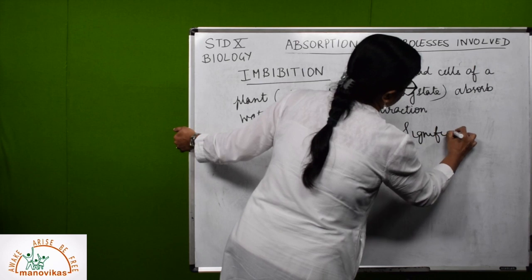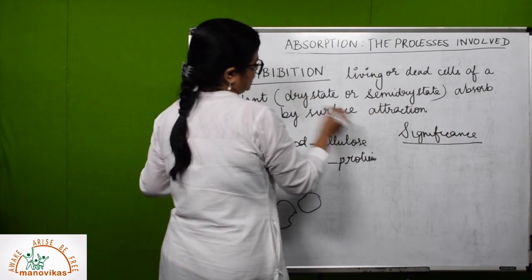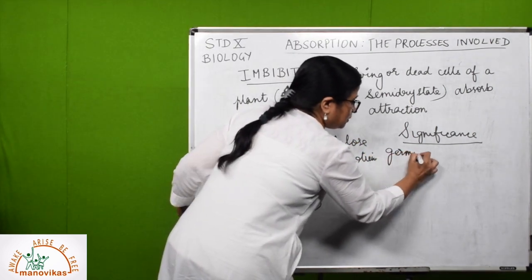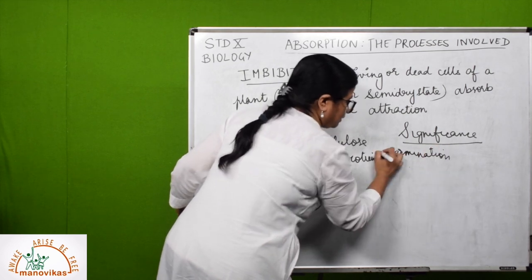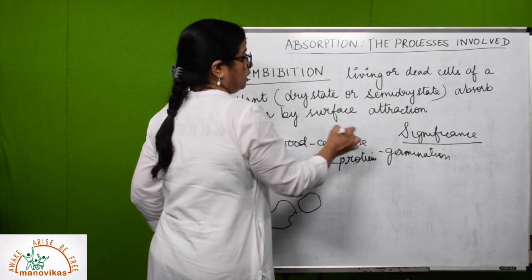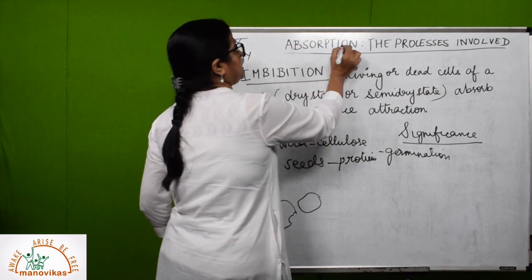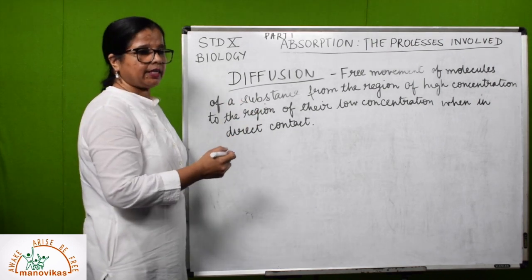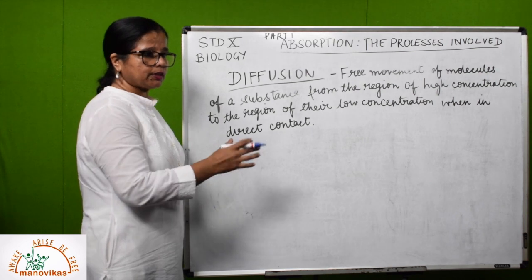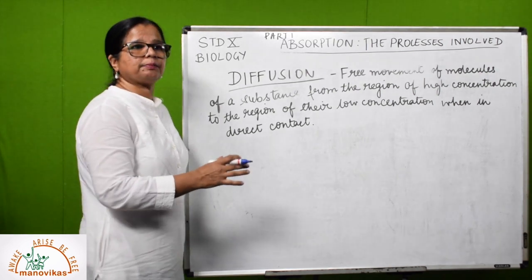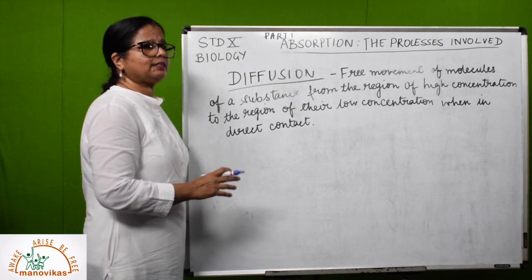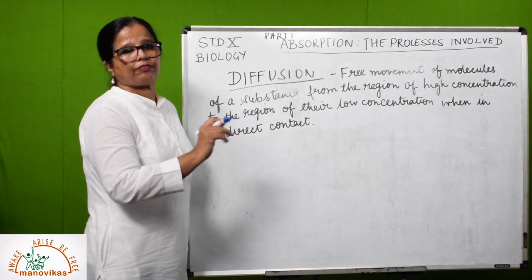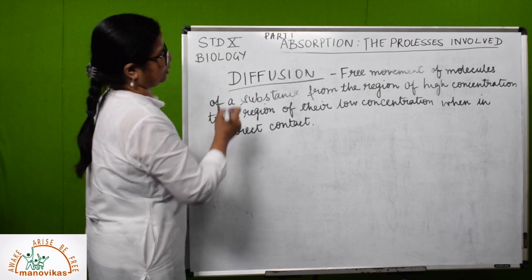What is the significance of imbibition? This process is very important to plants because when seeds are germinating, the seed coat has to break — otherwise there would be no germination. It is also a process helping in absorption of water. In imbibition, certain substances that have an affinity towards water — hydrophilic substances — attract water molecules towards themselves due to surface attraction.